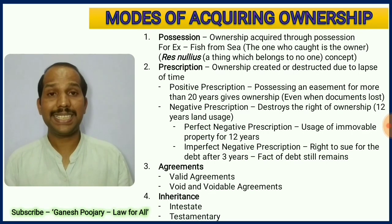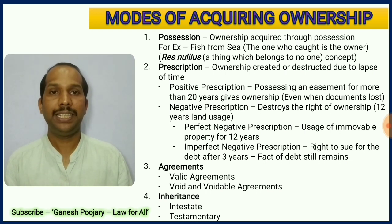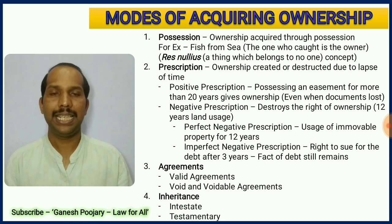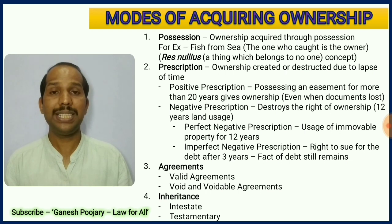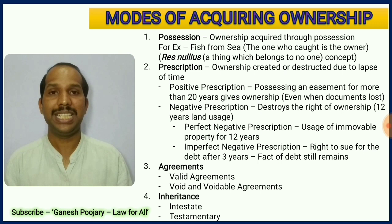The next aspect we are learning today is modes of acquiring ownership. There are four ways one can acquire ownership: possession, prescription, agreements, and inheritance. Regarding possession — a fisherman goes to sea, starts catching fishes, and once he takes possession of those fishes he becomes the owner of those fishes. That is ownership gained through possession.